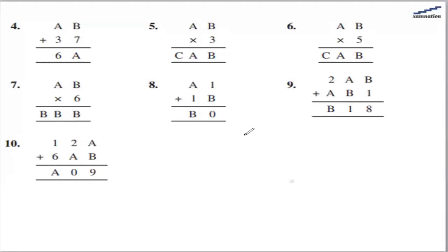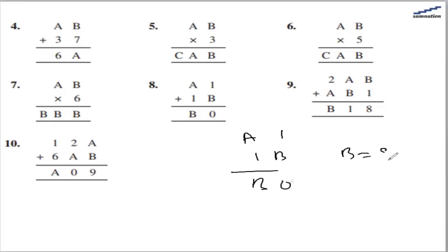For the 8th part, a1 plus 1b gives b0. Since 1 plus b gives 0, b is 9 and there is 1 carry. That means a plus 1 plus 1 (carry) equals 9, so a plus 2 equals 9, giving a as 7. So 71 plus 19 gives 90.